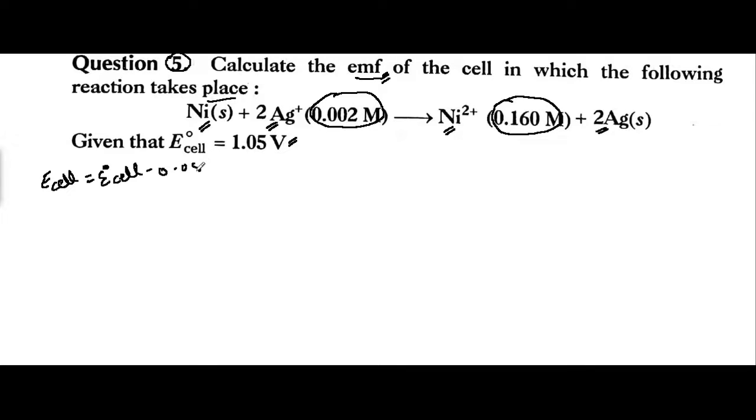E_cell = E°_cell - 0.0591/n log [products]/[reactants]. First of all, we have E°cell value, that is 1.05 minus 0.0591 upon n.